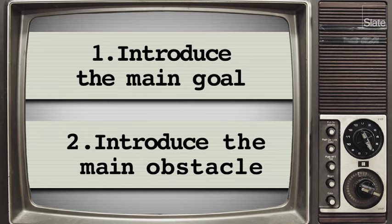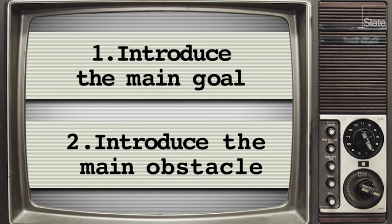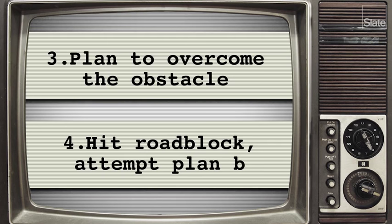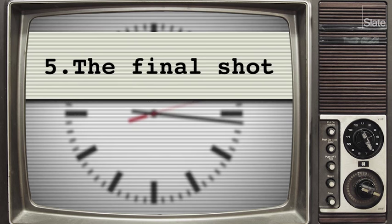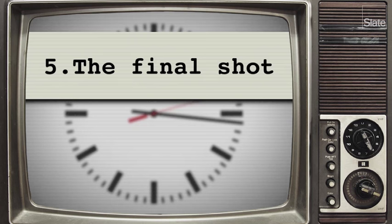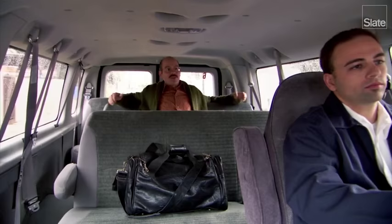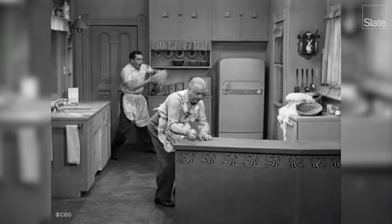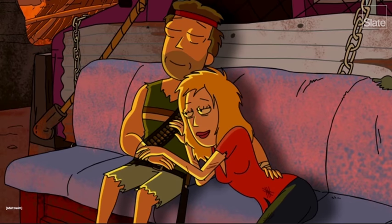So let's review. One: introduce the protagonist's main goal. Two: introduce the main obstacle to that goal. Three: the protagonist comes up with a plan to overcome the obstacle. Four: now we're about five minutes into the show. From here until about 15 minutes in, we have a series of scenes where the protagonist tries to overcome an obstacle, which then gets replaced with another obstacle. Five: the protagonist gives their goal, or fixing the obstacles, a final shot. Six: success or failure. Seven: we find out how this affects them in the long term, and usually everything goes back to normal. Now, many sitcoms have more than one protagonist, or multiple supporting characters whose stories we follow — these are called B or C plots. They follow the same formula in the same order; they just don't get as much airtime and don't always need to be resolved.